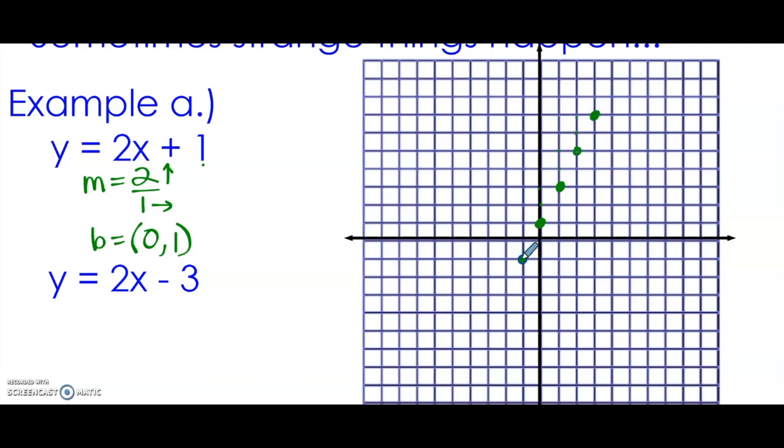That rises from left to right. We can also go the opposite direction: down 2 and left 1. Connect all those points, put some arrows on the ends. Alright, let's check out the second equation. The slope is the same.